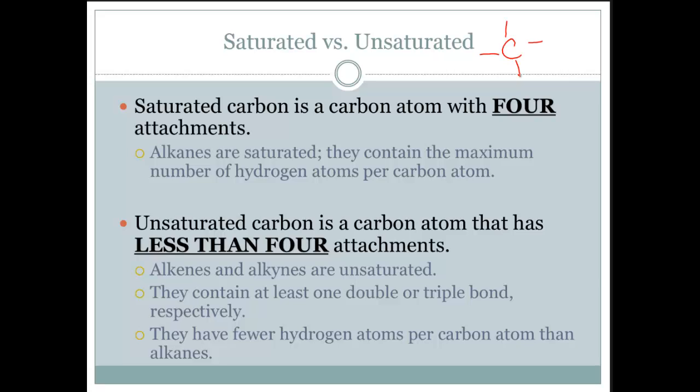Unsaturated carbon is a carbon atom with less than four attachments. So in other words, there's a double bond here somewhere. Alkenes and alkynes are unsaturated. They contain at least one double or triple bond, respectively. They have fewer hydrogen atoms per carbon atom than alkanes.